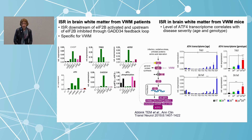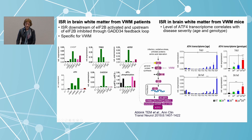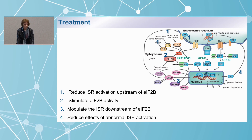We have mouse models representative of the chronic disease, and they also show activation of the ATF4 transcriptome. The older the mice are, the sicker they are, and the higher the ATF4 transcriptome is. We have multiple mutants that we crossbred, providing different disease severities, and the sicker the mouse is, the higher the ATF4 transcriptome. This suggests we could target the ISR for treatment. One approach we thought of in 2001 when we found the genes was to reduce ISR activation upstream of EIF2 by avoiding stresses, which really reduces episodes of decline in patients, but the chronic disease goes on.